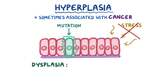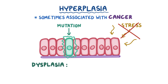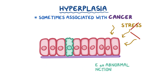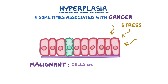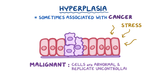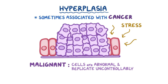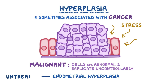While cells from hyperplasia are normal and healthy, cells from dysplasia can have an abnormal shape and function. And malignant cells might not only be abnormal, but also replicate uncontrollably and cause cancer. That's why individuals with endometrial hyperplasia that's left untreated can develop endometrial cancer.